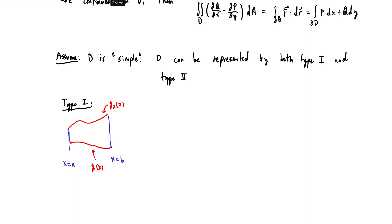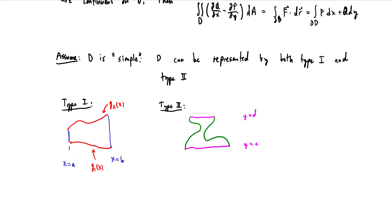A type 2 region is just the same picture flipped on its side. A type 2 region is bounded in the y-direction by straight lines, maybe y equals c and y equals d, and then in the x-direction it's bounded by functions — say h1(y) and h2(y). With these two types of regions, we can integrate first in the direction of the function boundaries, then integrate over an interval after we're done.